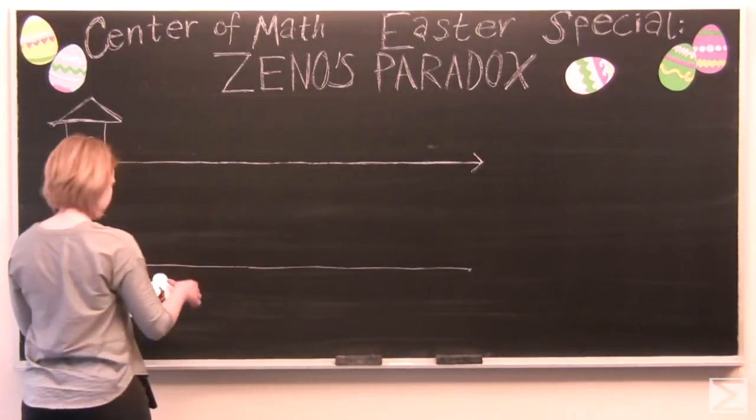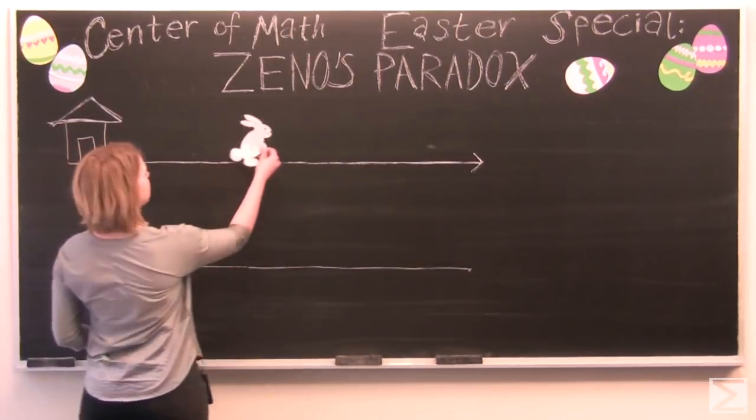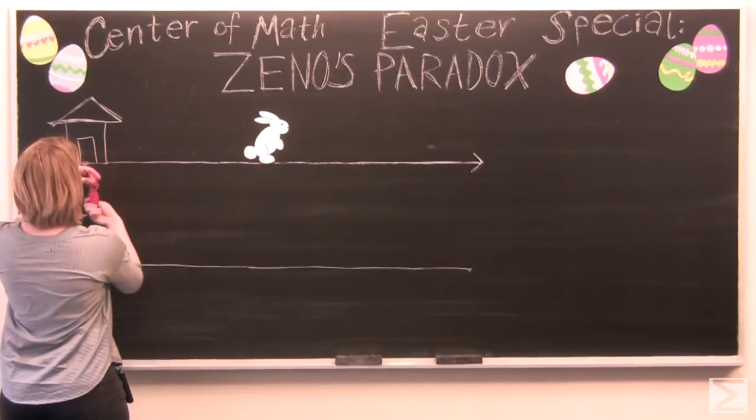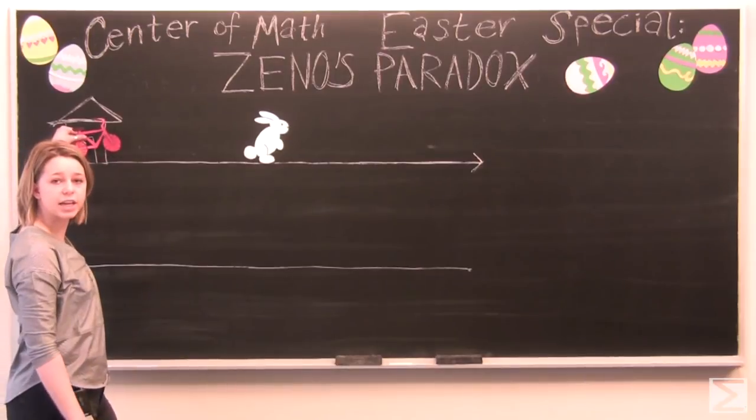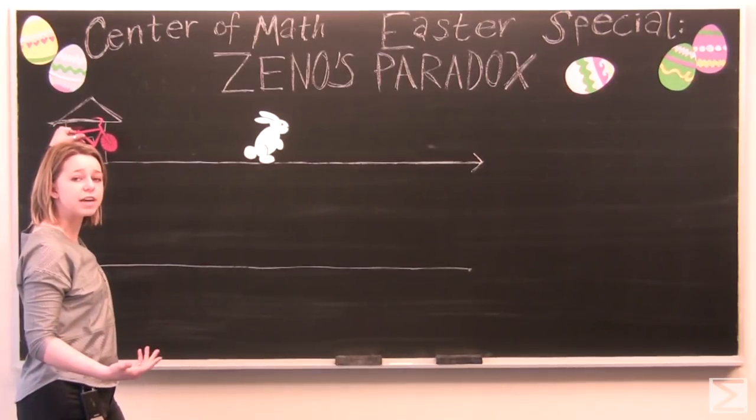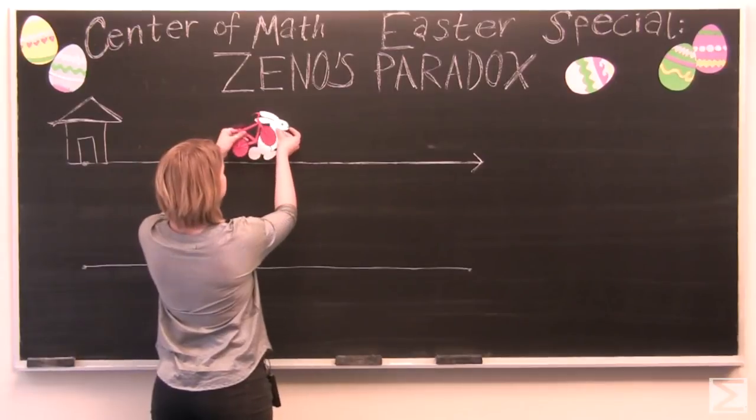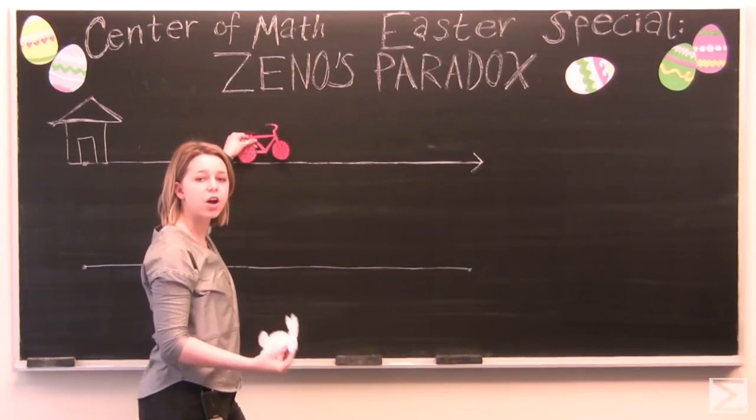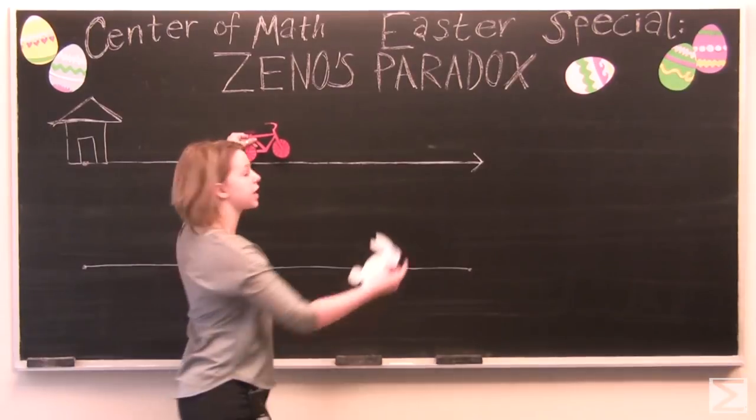So the Easter Bunny has a head start. The Easter Bunny is 100 meters ahead when John gets on his bike to catch up. Now John's a lot faster so he catches up those 100 meters. But in that time the Easter Bunny has already traveled another 50 meters ahead.